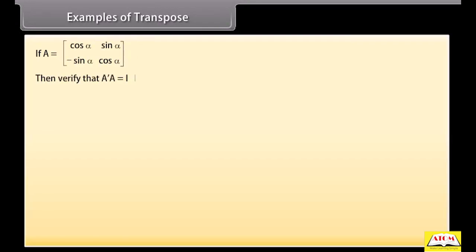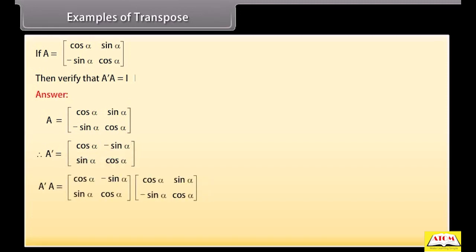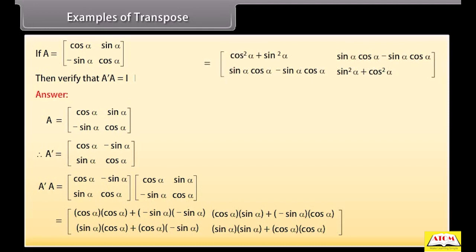If A is given, then verify that transpose of matrix A times matrix A is the identity matrix. A is given. Therefore, its transpose A' is the matrix with first row cos α, −sin α and second row sin α, cos α. Multiplying A transpose and A and solving, we get A transpose A equals the identity matrix. Hence verified.